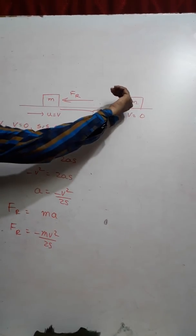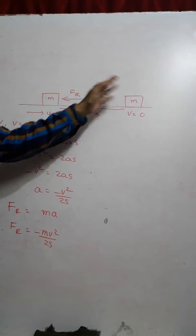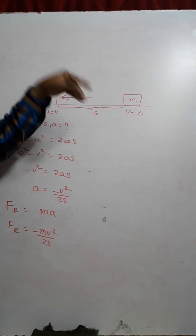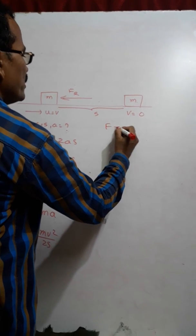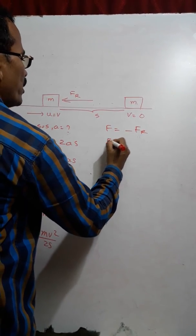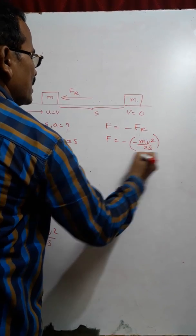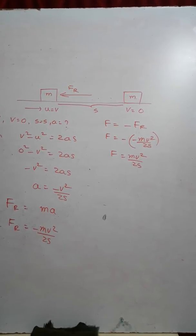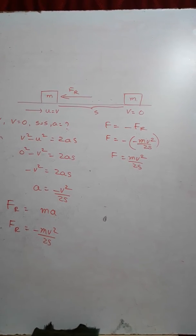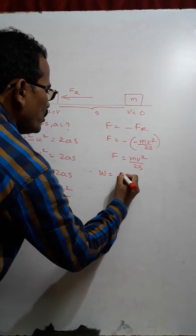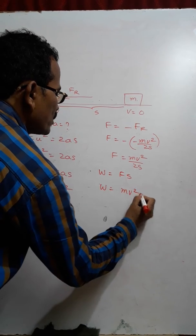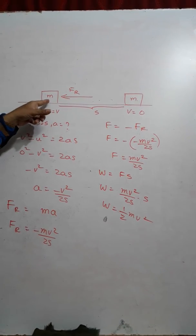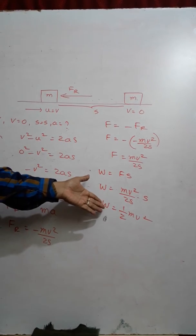Even though the opposing force is applied, the body has travelled a distance S and finally is brought to rest. So the body applies an equal force in the opposite direction. The force applied by the body F = −F_opposing = MV²/(2S). The body has done work. The work done by the body: W = F·S = MV²/(2S)·S. This work done is by virtue of its motion, so this work is nothing but kinetic energy.